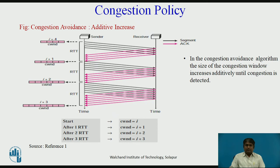In this congestion avoidance scenario, after the sender has received acknowledgements for a complete window size of segments, the size of the window is increased by 1. If we look at the size of the congestion window in terms of round trip time, we find that the rate is additive. When it starts, the congestion window is equal to i. After one RTT, the congestion window is i plus 1. After the second RTT, it is i plus 2, and likewise the additive increase continues.